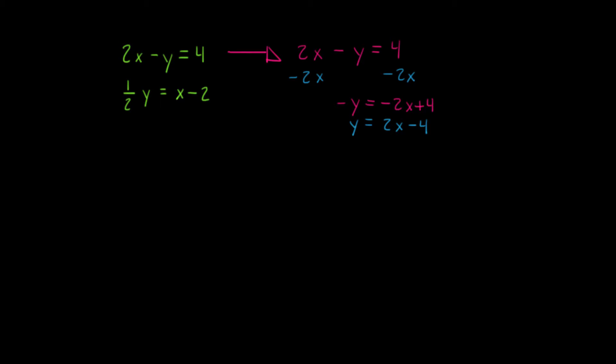Alright, now I'm going to move this other equation down a little bit. So I have one half times y. Another way of thinking about this is one half times y over 1, so one half times y over 1 is equal to x minus 2.